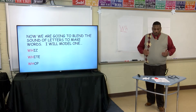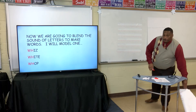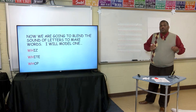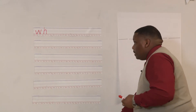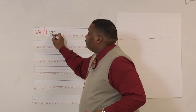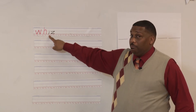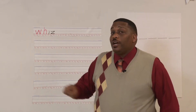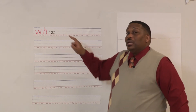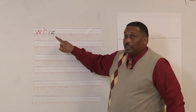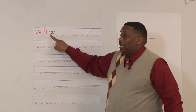Let's get ready for some blending of words. Our first word — I'll write the special sound in red and the other letters in black. My special sound is WH. I have a short vowel I in the middle — short vowel I says 'it.' The last letter is the consonant Z, and Z says 'z.' Let's blend it: W-I-Z — whiz!